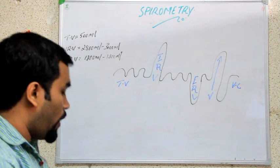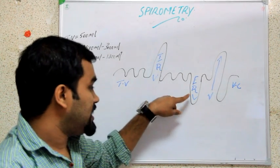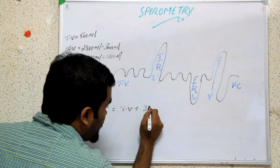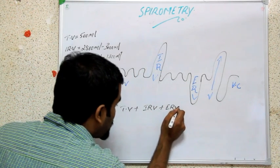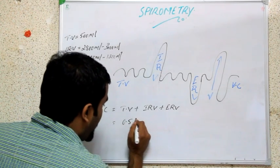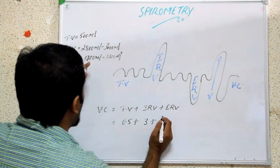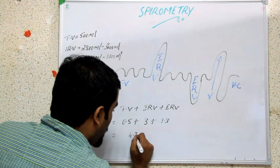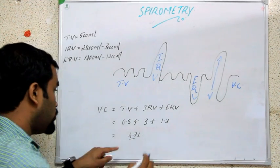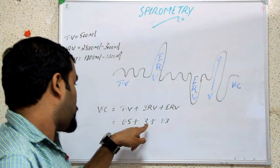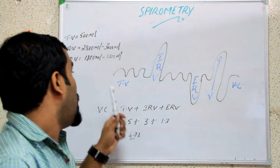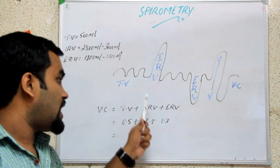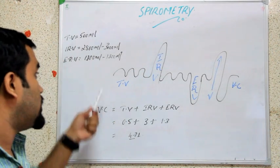Vital capacity is the sum of TV plus IRV plus ERV. Just calculate: 0.5 liter plus 3 liter plus 1.3 liter equals around 4.7 to 4.8 liter. You need to know only TV, IRV, and ERV — vital capacity is their sum, so no need to memorize it separately.